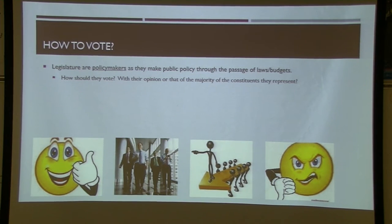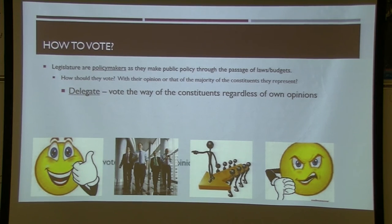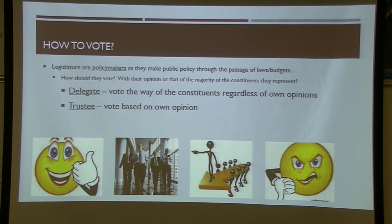This is an important AP theme: how should members of Congress vote? Not just yay or nay, but should they vote the way their constituents want or by their own judgment? If you vote as a delegate, you vote the way your constituents want — even if you personally believe differently. The opposite is a trustee: you vote based on what you believe is best. That's a riskier approach politically.